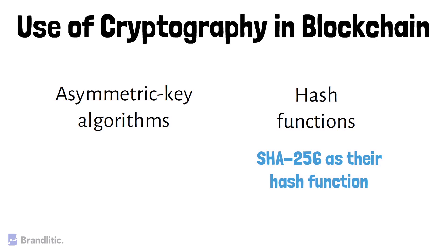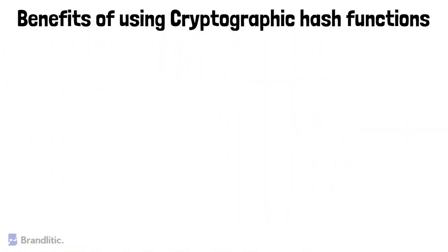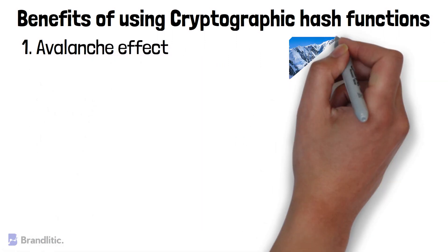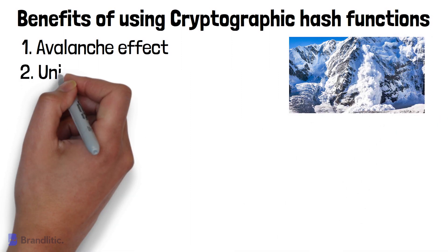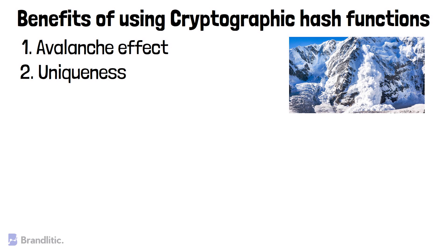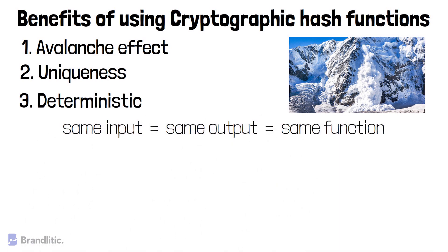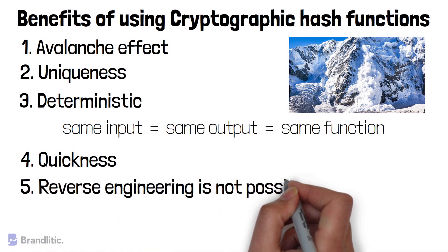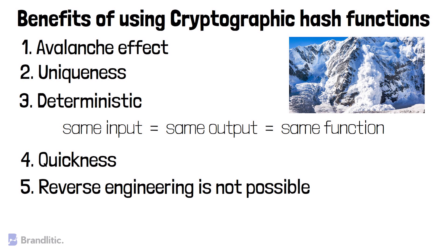Cryptographic hash functions provide the following benefits to the blockchain. First, avalanche effect, which means a slight change in the data can result in a significantly different output. Second, uniqueness — every input has a unique output. Third, deterministic, meaning any input will always have the same output if passed through the same hash function. Fourth, quickness — the output can be generated in a very small amount of time. Fifth, and most regarded, reverse engineering is not possible: we cannot generate the input by having only the output and the hash function.